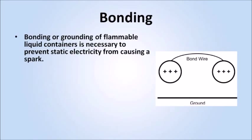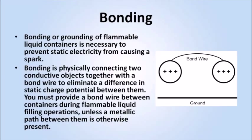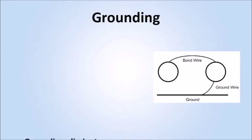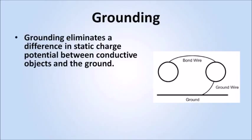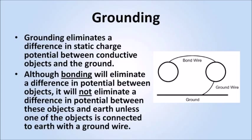Bonding or grounding of flammable liquid containers is necessary to prevent static electricity from causing a spark. Bonding is physically connecting two conductive objects together with a bond wire to eliminate a difference in static charge potential between them. You must provide a bond wire between containers during flammable liquid filling operations, unless a metallic path between them is otherwise present. Grounding eliminates a difference in static charge potential between conductive objects and the ground. Although bonding will eliminate a difference in potential between objects, it will not eliminate a difference in potential between these objects and Earth, unless one of the objects is connected to Earth with a ground wire.